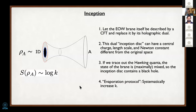I want to compute the entanglement entropy using the standard Ryu-Takayanagi language, and we'll discover that if you apply the RT prescription in this scenario, the island formula we alluded to at the beginning will pop up. The standard prescription: if you want to compute the entanglement entropy of region A1 on the original boundary, you find a minimal surface—the orange line—but it could happen that this minimal surface hits the end-of-world brane.